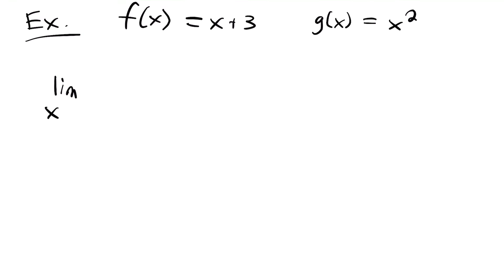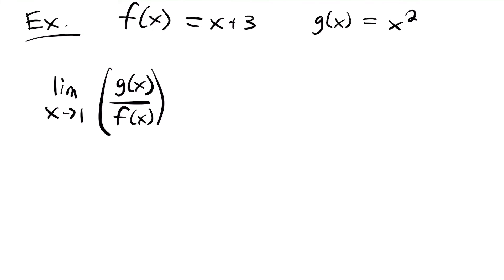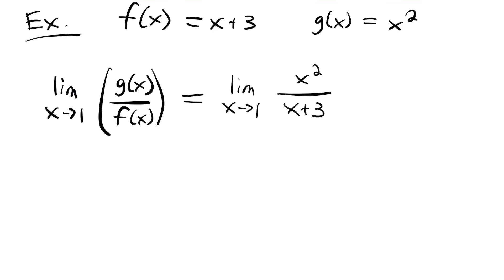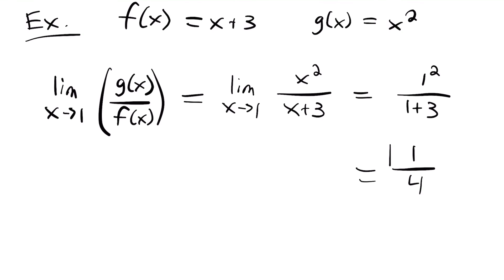Next, we'll look at the limit as x approaches 1 for g of x divided by f of x. Just like before, we plug in the functions: the limit as x approaches 1 of x squared divided by x plus 3 — g of x in the numerator and f of x in the denominator. Plugging in 1, we get 1 squared over 1 plus 3, which equals 1 over 4. So our answer is one fourth.